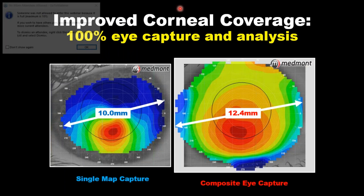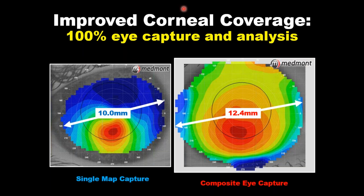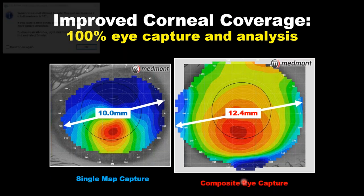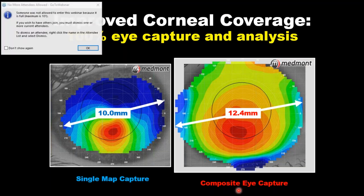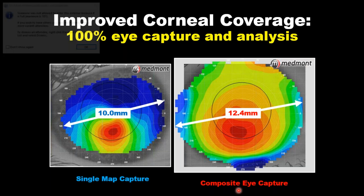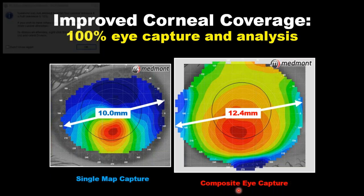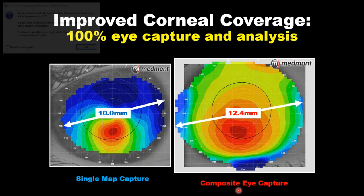You merge all of those images together and that gives you a larger view of the eye — this is what Medmont calls the composite eye capture. Como pueden ver, en el lado izquierdo tienen la captura central. En el lado derecho tienen esos cinco mapas unidos, creando una captura de básicamente la córnea completa. La diferencia es relativamente grande: de 10 milímetros a 12.4 milímetros de cobertura total. Se llama el composite eye capture.